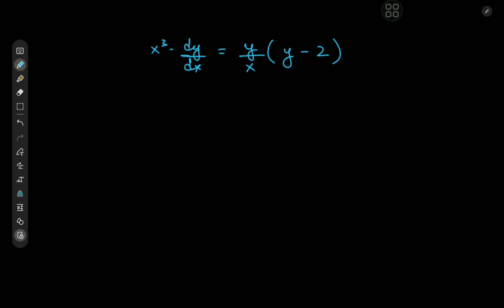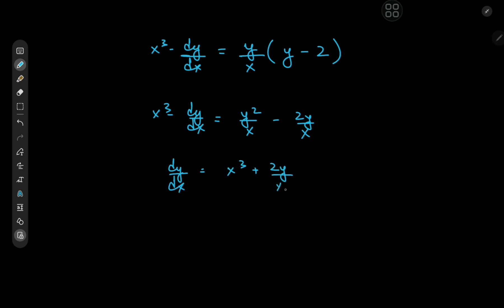So I just scrapped that idea, and to Italian things up instead I'm going to be solving this Riccati differential equation. A Riccati equation is a first-order differential equation that's quadratic in the function we're trying to solve for — in this case we're solving for y in terms of x. Expanding this, we get x³ minus dy/dx equal to y²/x minus 2y/x, which can be written as dy/dx equal to x³ + 2y/x − y²/x.